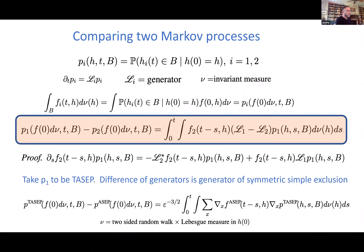We take P₁ to be TASEP and P₂ to be ASEP. The difference of the generators of ASEP and TASEP is nothing but symmetric simple exclusion — the model where the random walks jump symmetrically. When L₁ − L₂ is symmetric simple exclusion, because it's a self-adjoint operator, I can integrate by parts and produce a Dirichlet form type object. So I put a ∇ on the F_ASEP and a ∇ on the P_TASEP. We're working in rescaled variables — on a lattice of size epsilon, with time rescaled by epsilon^(−3/2). This is all being done for the rescaled processes.